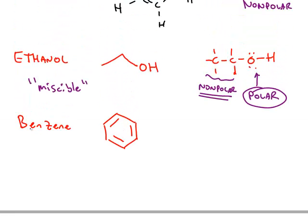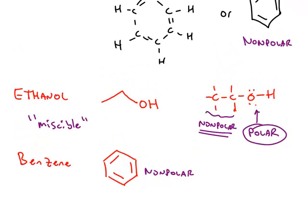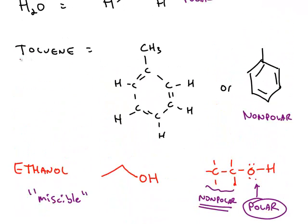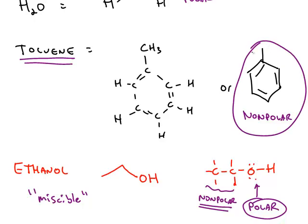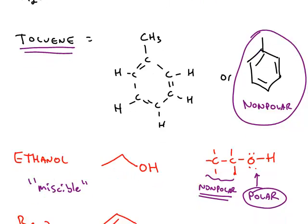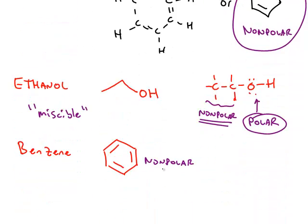Similarly, benzene does not dissolve very much in water. Here's the bond line formula — only carbons and hydrogens. Benzene is nonpolar. So if you wanted to dissolve benzene and make a solution, you would use toluene as the solvent, for example, because this nonpolar solvent has very similar attractive forces compared to the benzene.